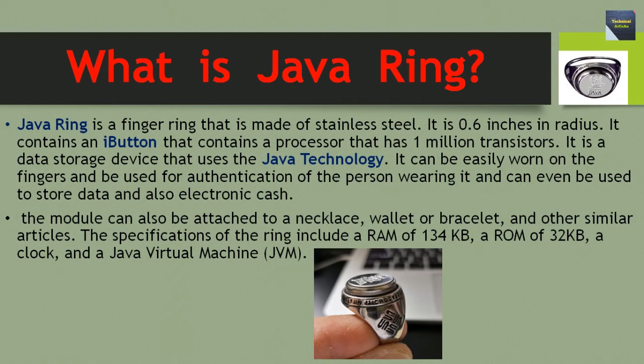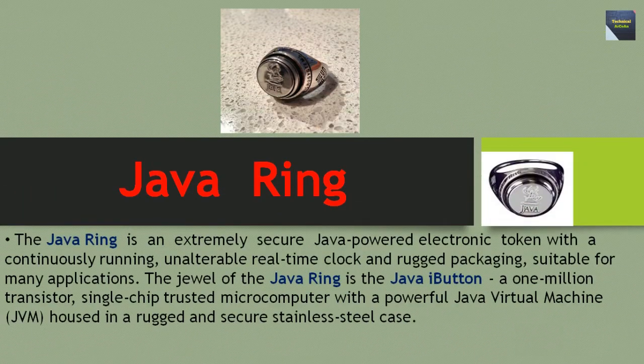The specifications of the ring include a RAM of 134 KB, a ROM of 32 KB, a clock, and a Java Virtual Machine. The Java Ring is an extremely secure, Java-powered electronic token with a continuously running, unalterable, real-time clock and rugged packaging suitable for many applications.